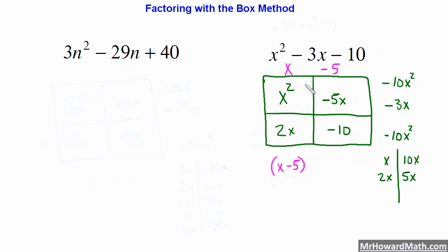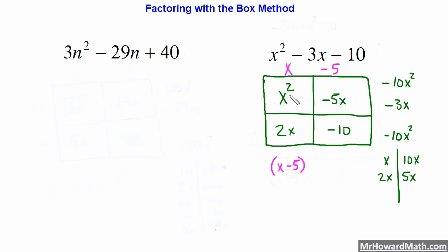This row and this row will give us our next factor. Looking here, the greatest common factor is just an X. Since this is positive, we know this will be positive, and the greatest common factor here is just a 2. So we now have our other factor: X minus 5 and X plus 2.